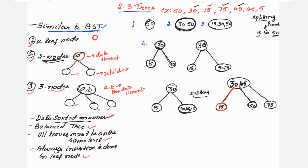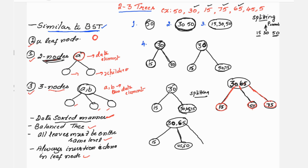All elements are in sorted order: 15, 30, 50, 65, 75. Next is element 45. Since 45 is greater than 30 and less than 65, it goes into the center child node. The center child node already has 50, so we write 45 and 50. The middle child always contains elements greater than the first data element and less than the second. The right child 75 is greater than 65.